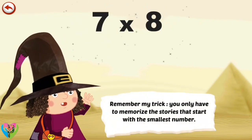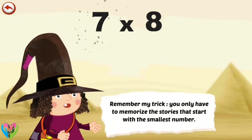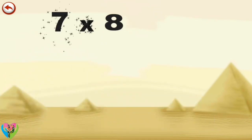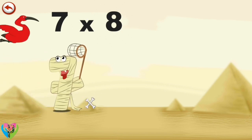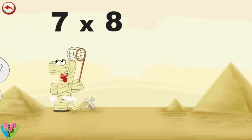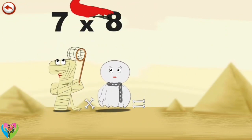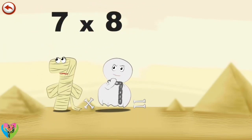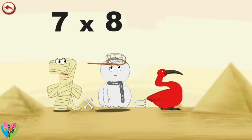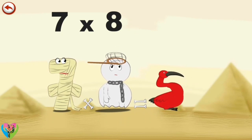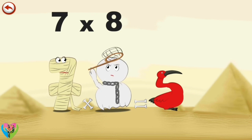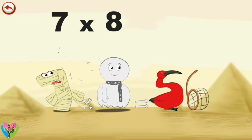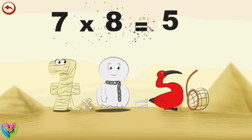Remember my trick. You only have to memorise the stories that start with the smallest number. What's the story of 7 times 8? The mummy Ram 7 wants to catch a beautiful ibis with her net. Spooky 8 the ghost arrives and frightens both the mummy and the bird. The net lands on the ghost's head, and the ibis flies down in the shape of a 5. Spooky 8 takes off the net which is in the shape of a 6 and throws it away. The mummy is furious that her hunting expedition has been spoiled. 7 times 8 is 56.